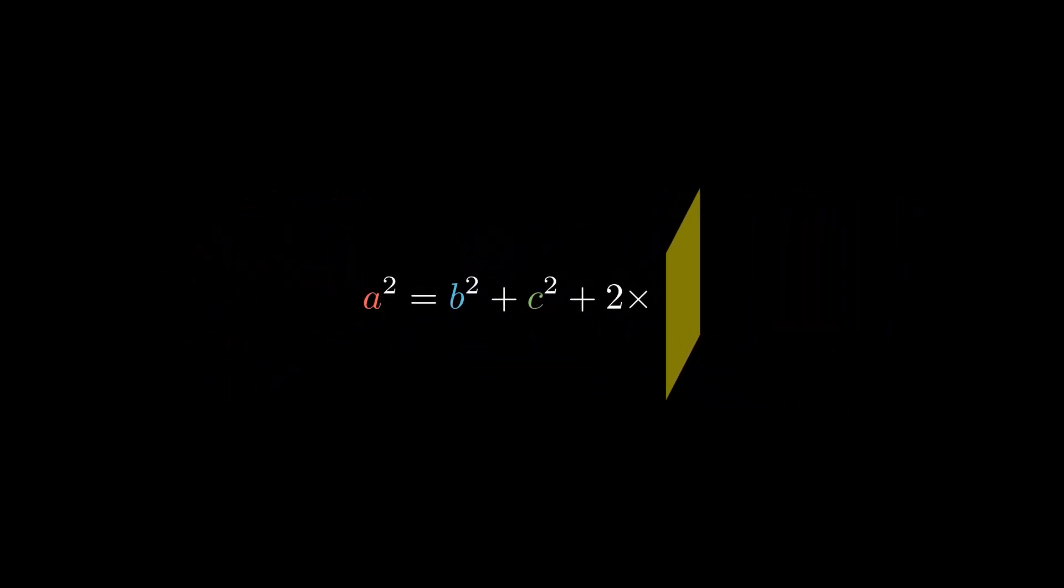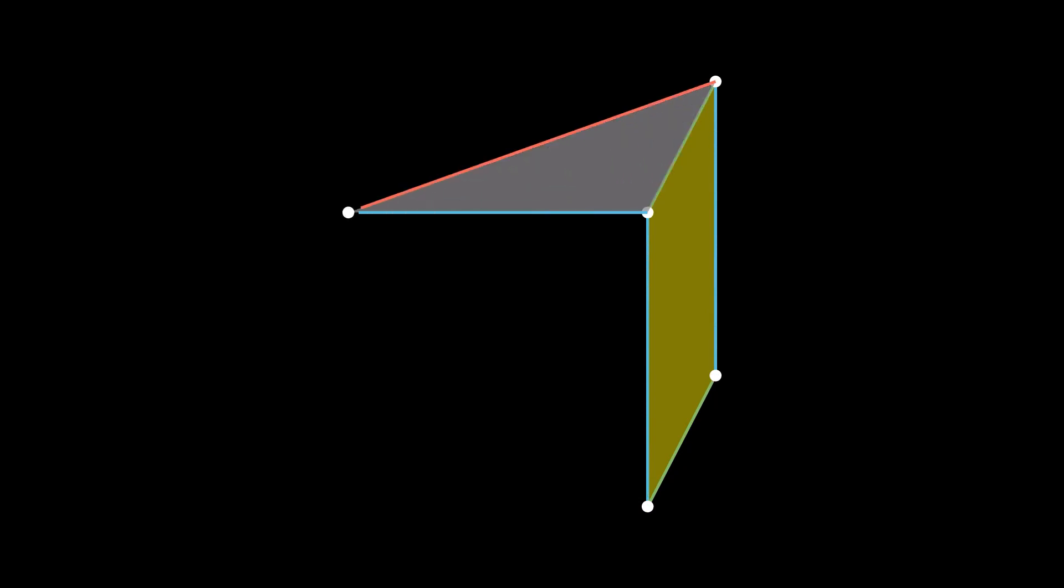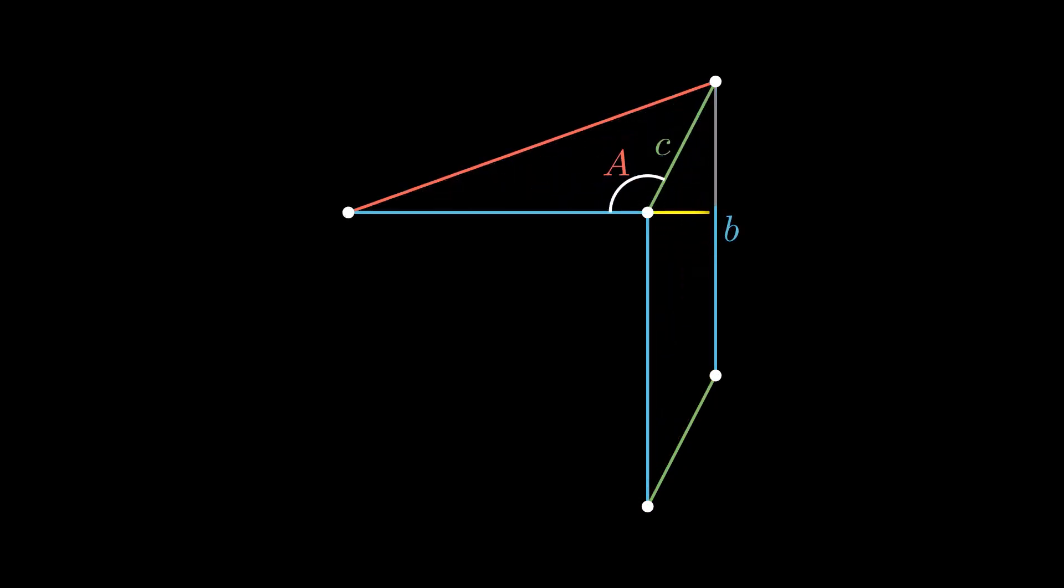Let's find the parallelogram's area again. The base is still b, but now the height of the parallelogram is negative c times the cosine of a. The cosine of an obtuse angle is negative. We need to negate this value in order to get the positive area that we're looking for. That's where the minus sign comes from.